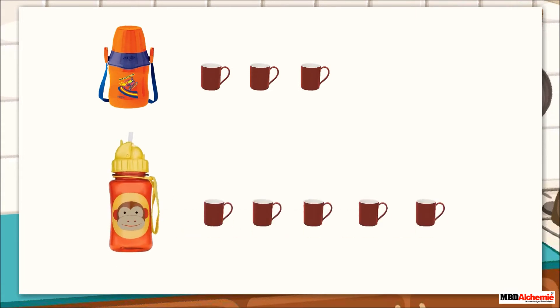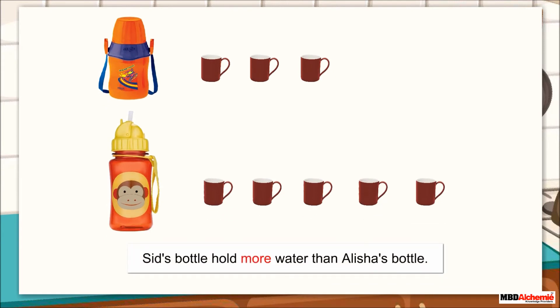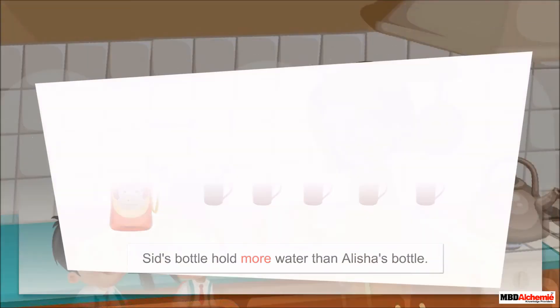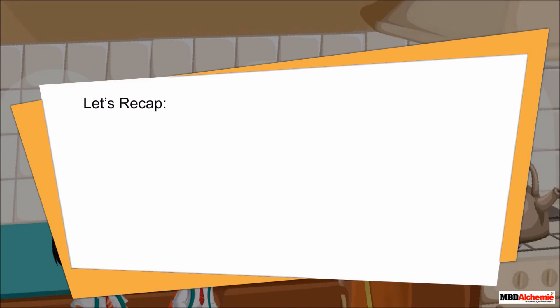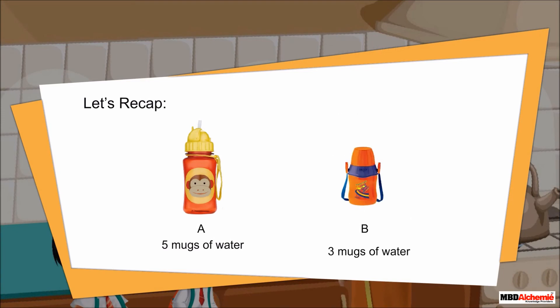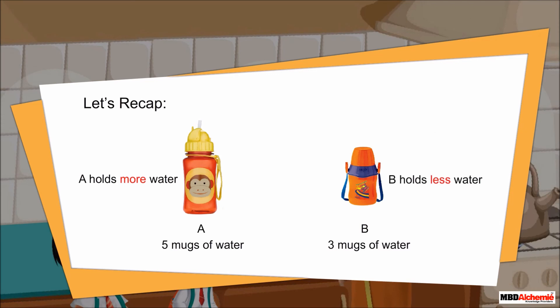We can also say that Sid's bottle holds more water than Alicia's bottle. Let's recap. If body A holds five mugs of water and body B holds three mugs of water, then we can say that body A holds more water and body B holds less water.